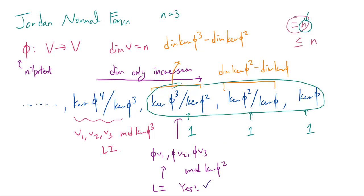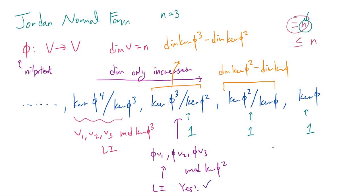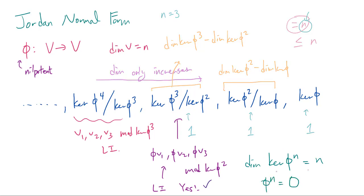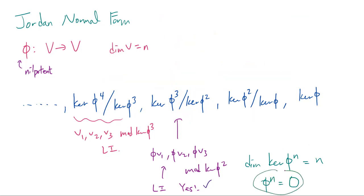When we sum up the dimensions of all of these spaces starting with kernel of phi to the Nth power modded by kernel of phi to the N minus 1, we should get N. That's telling us that kernel of phi to the Nth power is going to have dimension N. In other words, phi to the Nth power is going to be the zero map — which is a fascinating fact that we were taking for granted so far.